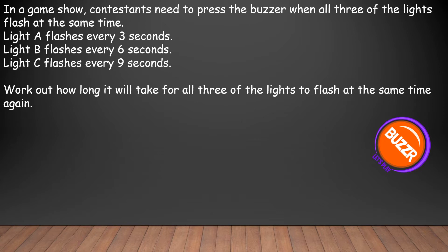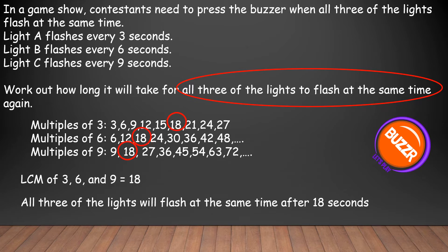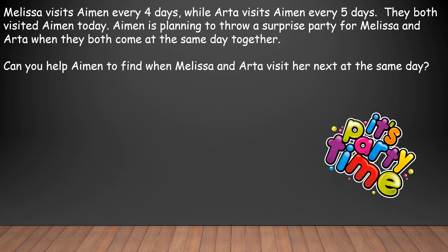If you were one of the contestants and you know we can use LCM to figure out when something will happen again at the same time, you might be the winner. The key words to pay attention to are 'all three of the lights flash at the same time again.' So firstly we write down the multiples of 3, 6, and 9, and then find the least common multiple. We can see that 18 is the LCM of 3, 6, and 9 — meaning all three lights will flash at the same time after 18 seconds.